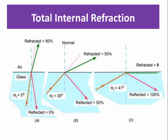Sometimes light bends back into the same medium instead of passing into the other medium. When it is traveling from denser medium to rarer medium, it is known as total internal reflection.